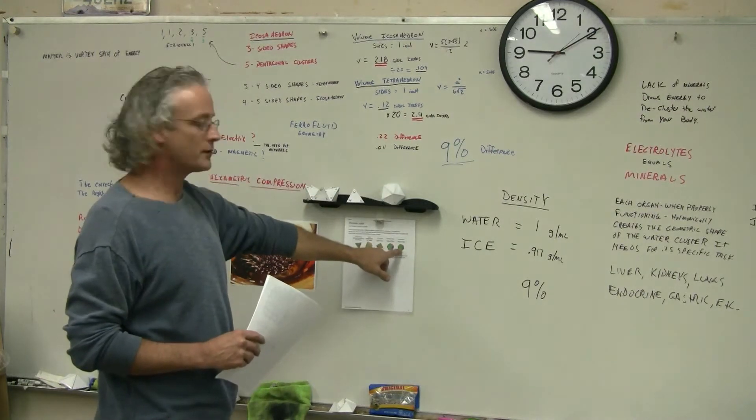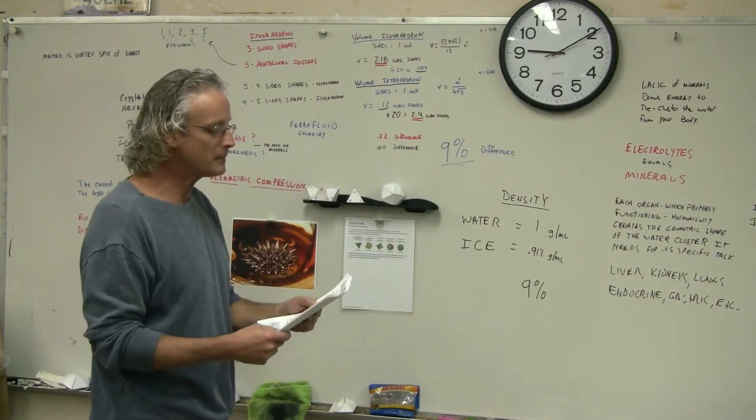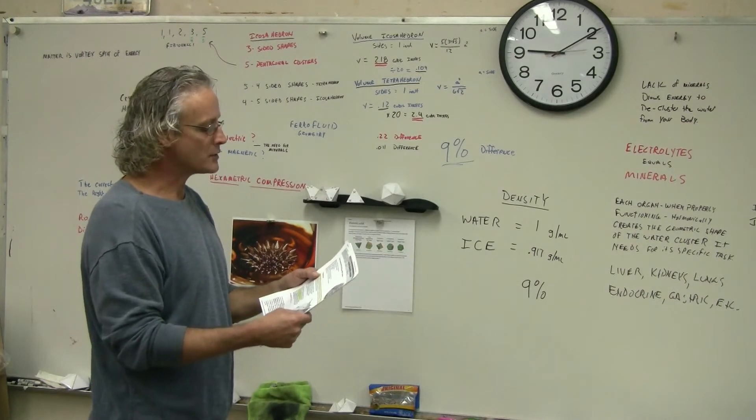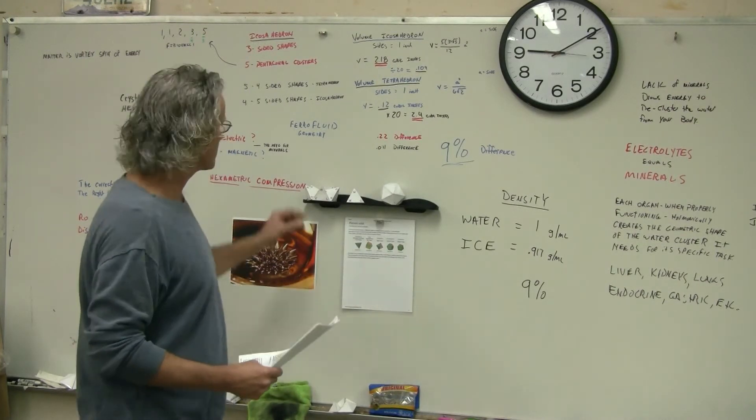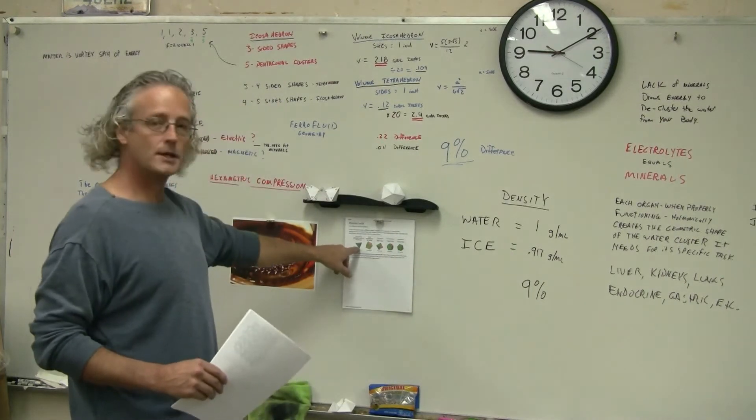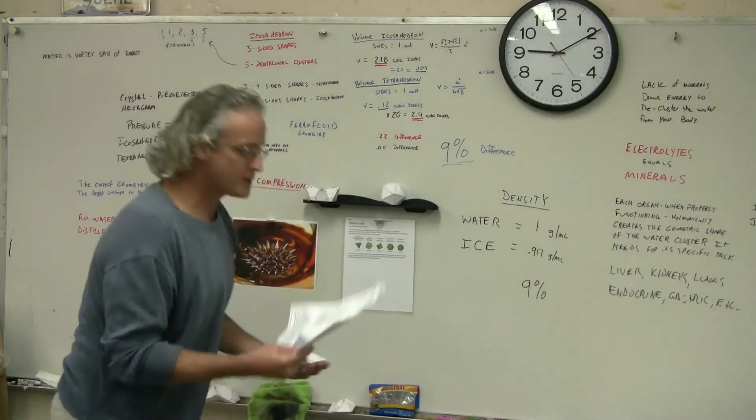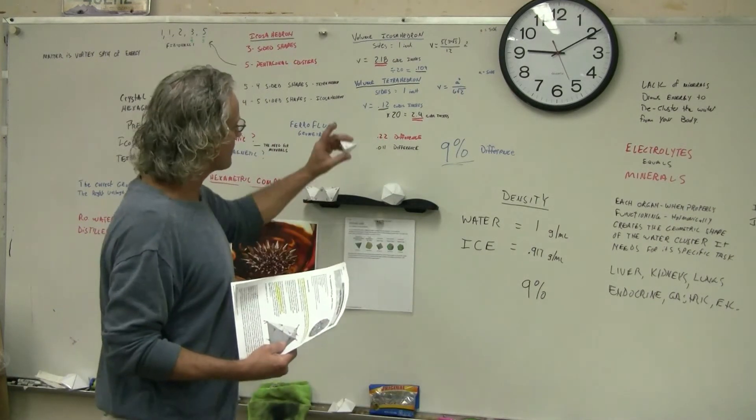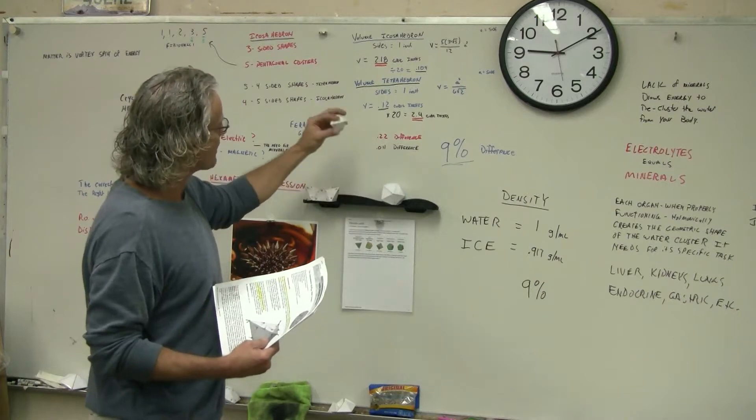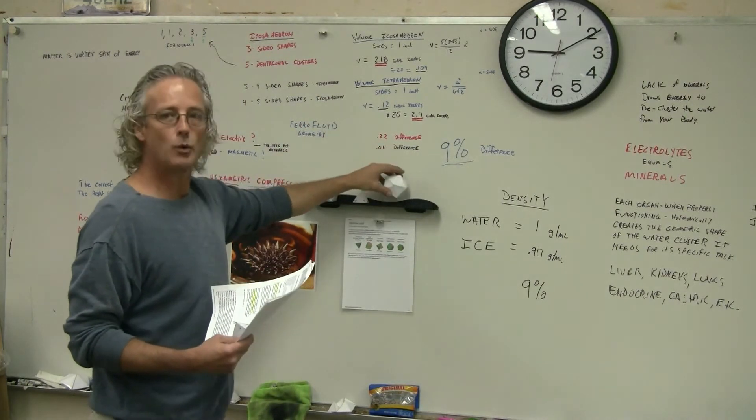It has 20 faces and is the top of the line of the platonic solids. They talk about icosahedral water clusters forming tetrahedral units. A tetrahedron is this guy, the first of the platonic solids. So essentially, this paper is saying there are 20 tetrahedrons in an icosahedral water cluster.